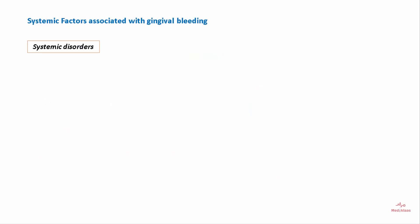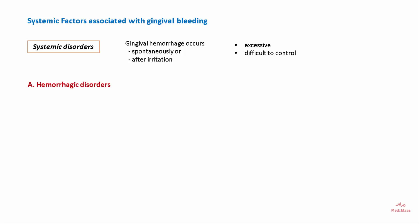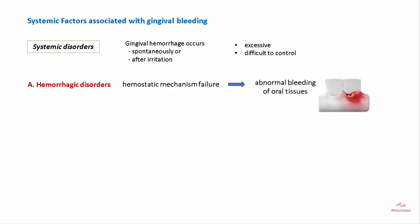Systemic factors associated with gingival bleeding can be due to systemic disorders, in which gingival hemorrhage occurs spontaneously or due to any kind of irritation. The bleeding in such cases is excessive and could be difficult to control. These systemic disorders can be hemorrhagic disorders, characterized by failure of the hemostatic mechanism that leads to abnormal bleeding of the oral tissues.